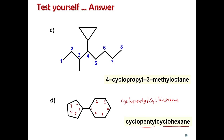That is it for today. We have finished the nomenclature of alkanes — both cyclic and aliphatic. Do the exercises and good luck.